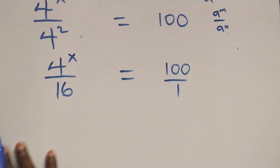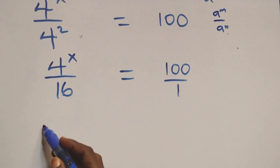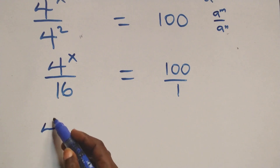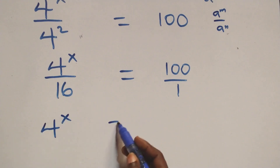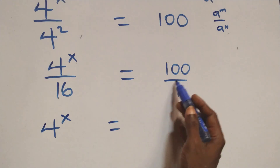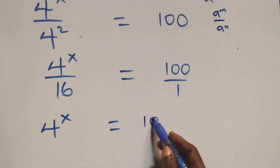We cross multiply. At this, 4 raised to power x times 1, which is the same thing as 4 raised to power x, equals to 100 times 16.